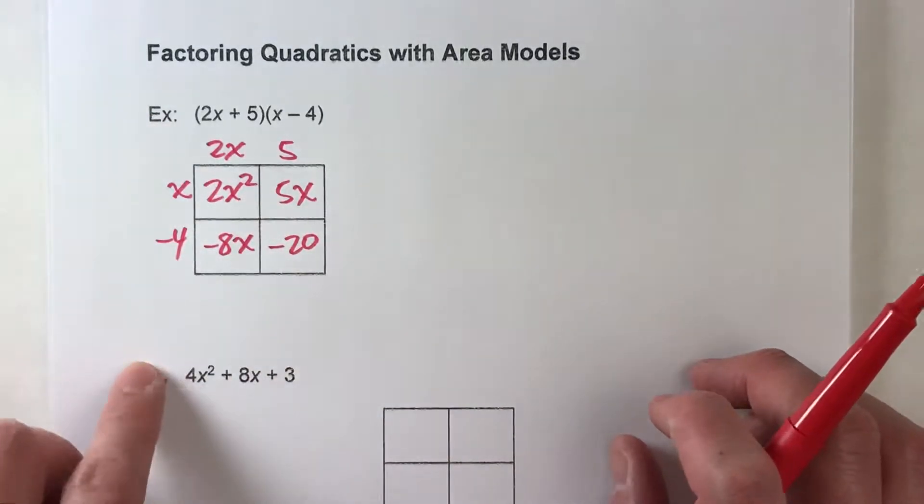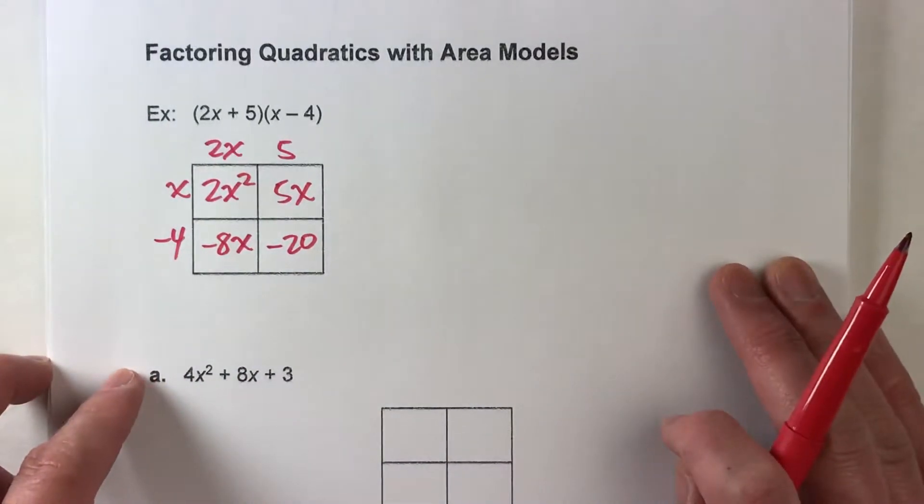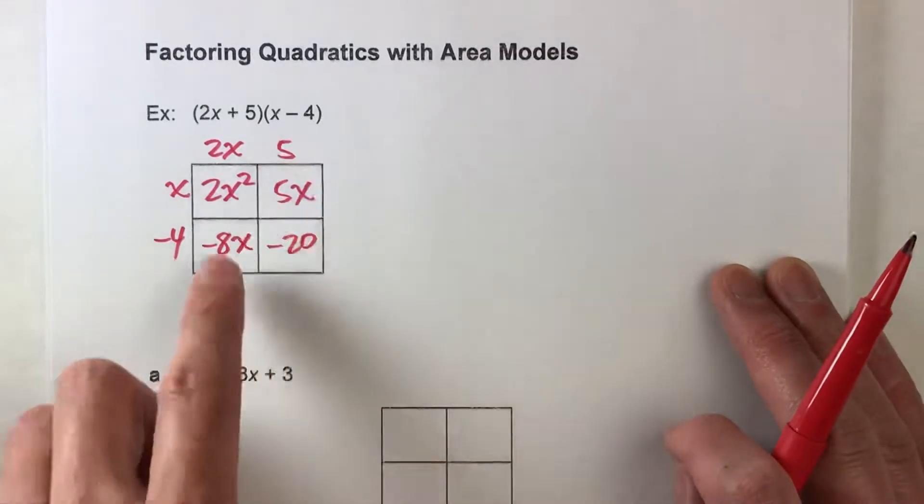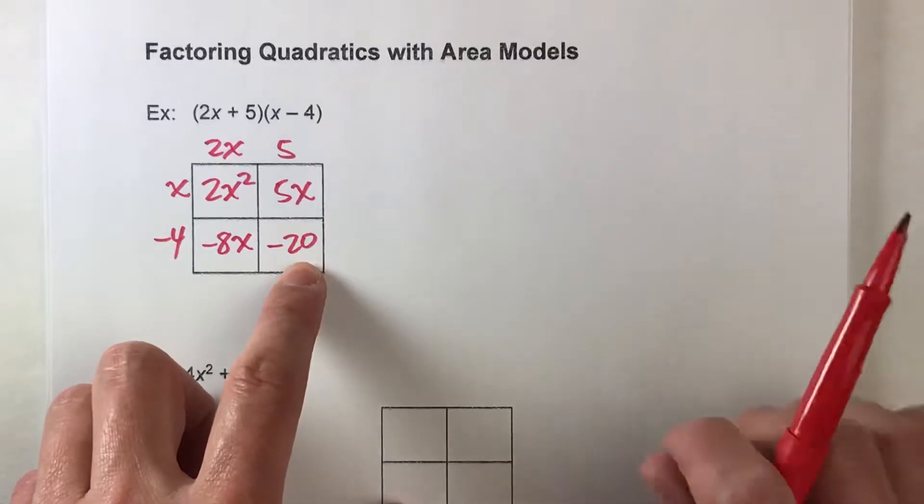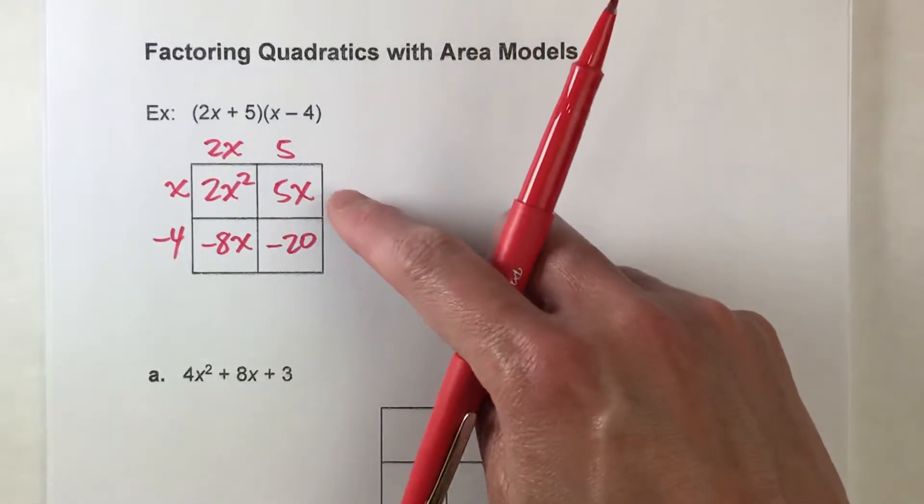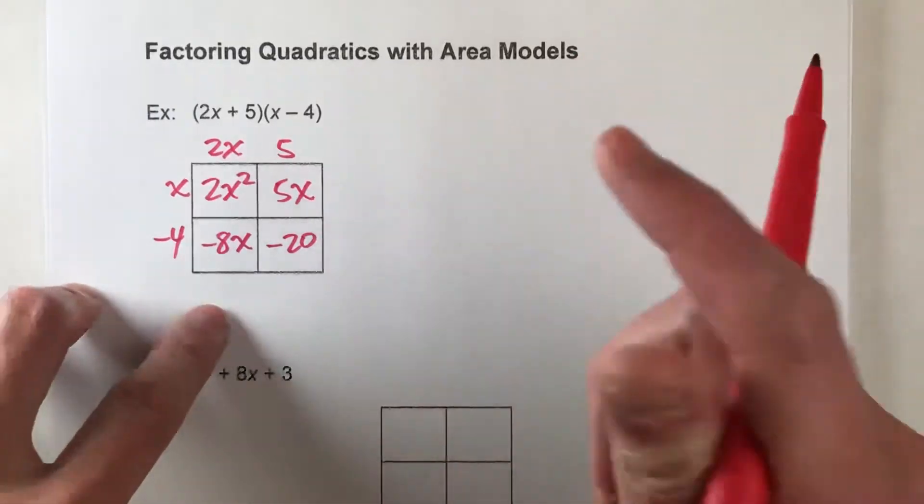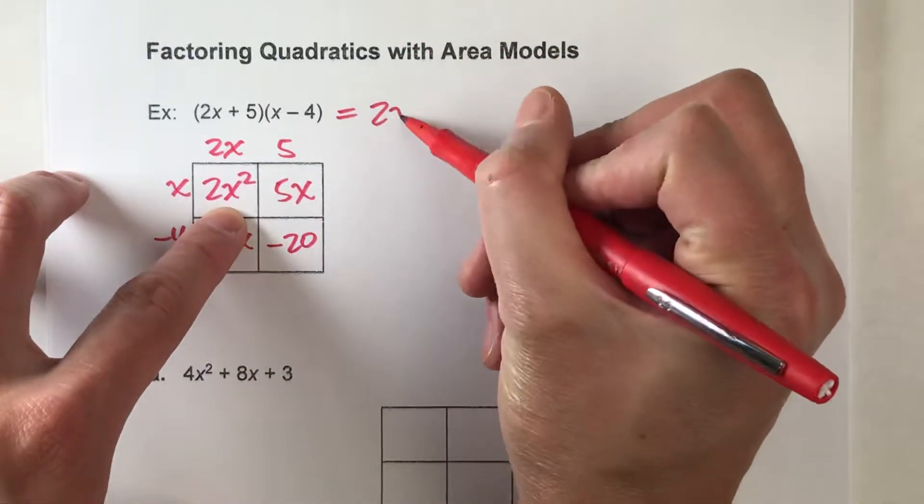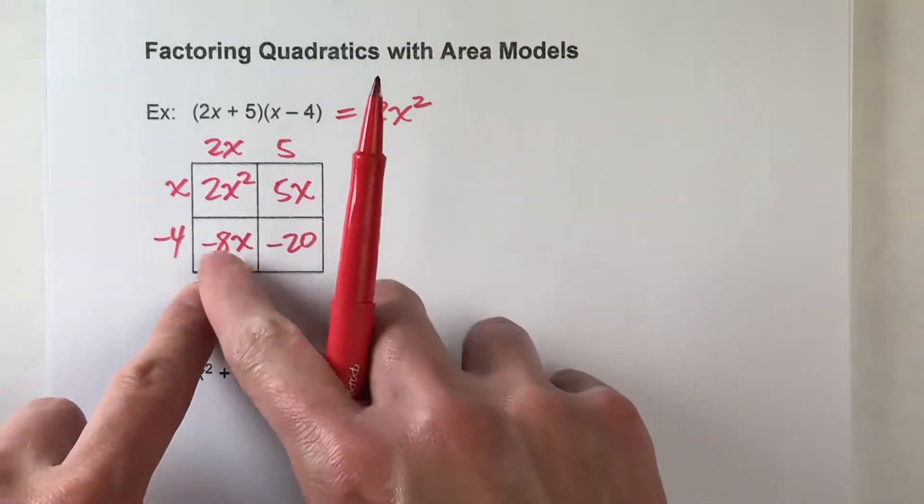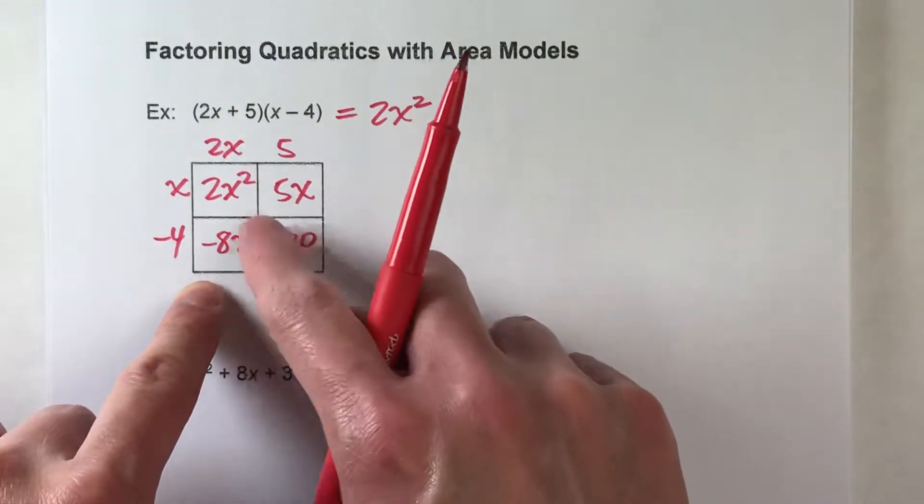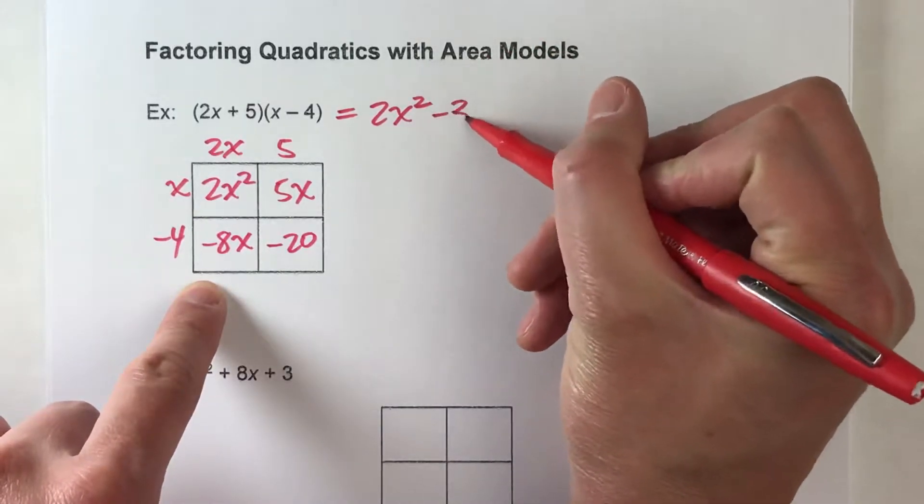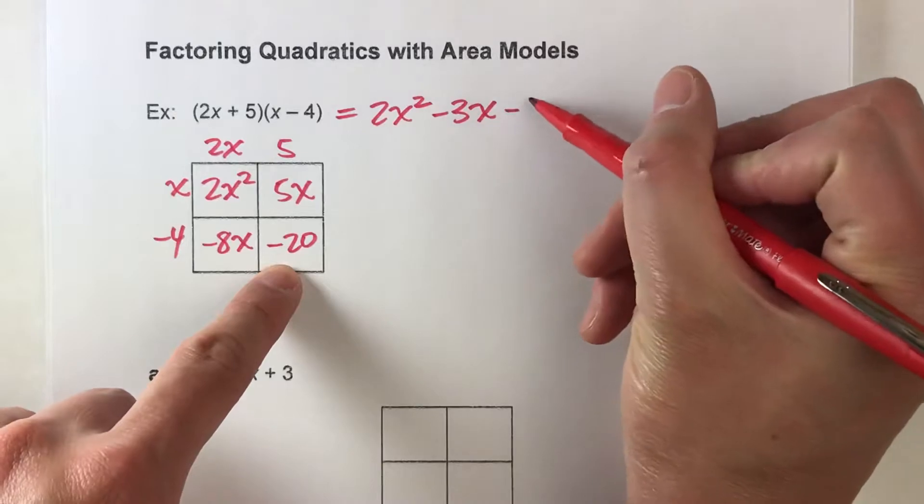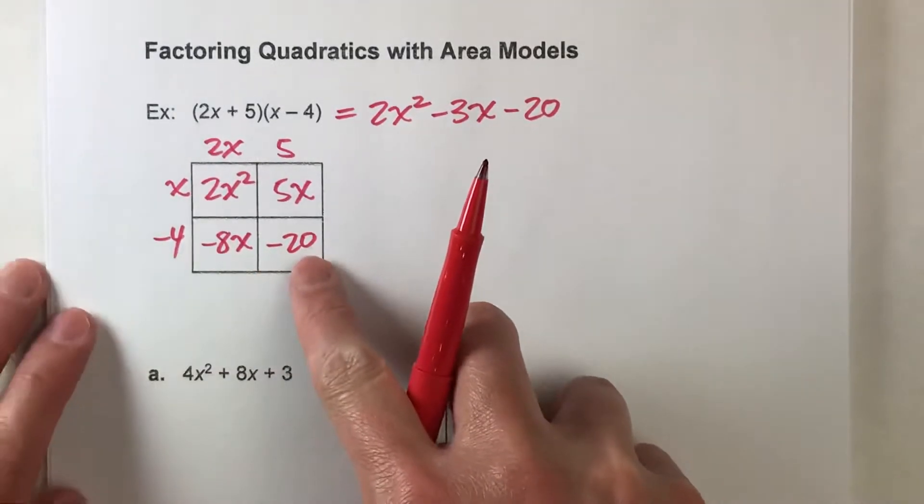And whenever you do this, you're always going to notice a very similar pattern here. You're going to have your x squared term here. You're going to have your regular number term here. And then these two boxes are going to be your x terms. So to get this in standard form, you would take the x squared term, add your like terms because you have 2x terms. So add those. We get negative 3x. And then your constant term or your regular number. And there you go.